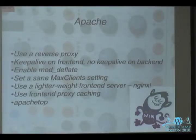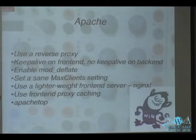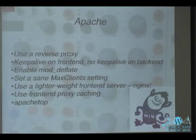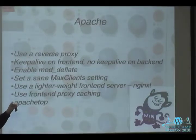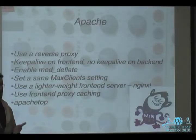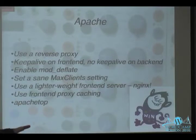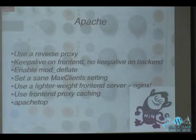Set a sane max clients setting — there's a formula available. Use a lightweight front-end proxy server like NGINX, which is magic. Front-end proxy caching is also a point where you can apply caching separate from your WordPress — if you learn NGINX as a front-end proxy you can accelerate and proxy content for any application, not just WordPress. Apache Top watches your logs and tells you where traffic is coming from; you can switch through modes — it's really useful.